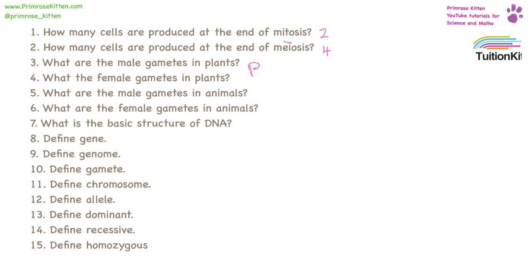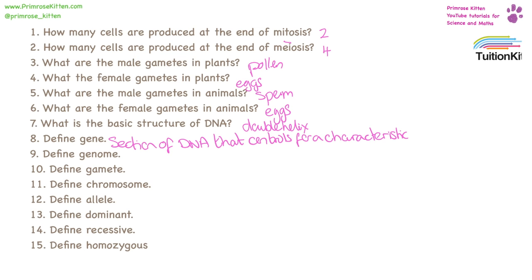The male gametes in plants are pollen, and the female gametes in plants are eggs. The male gametes in animals are sperm, and the female gametes in animals are eggs. The basic structure of DNA is a double helix. A gene is a section of DNA that controls for a characteristic. The genome is all of the DNA within an organism. Gametes are sex cells — so sperm, egg or pollen. A chromosome is a long molecule of DNA.